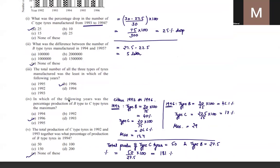The fourth question asks in which year the percentage production of B-type to C-type tires was maximum. You calculate the ratio for every year and find the maximum. The answer is 1996, where the ratio comes out to approximately 29.